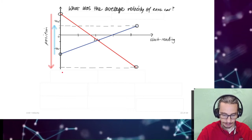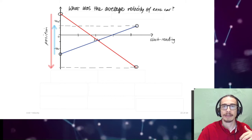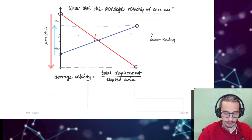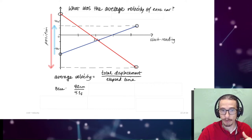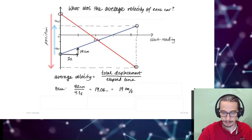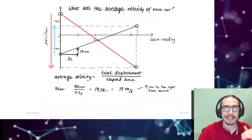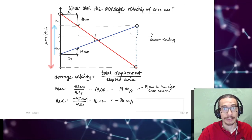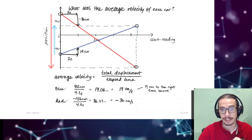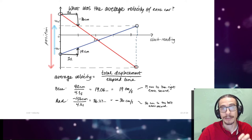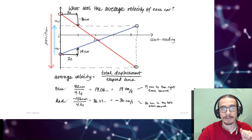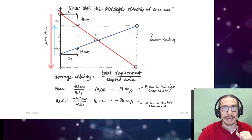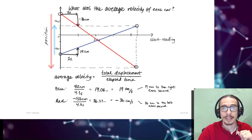Average velocity, like average speed, is total displacement divided by total elapsed time. Blue car: +82 cm ÷ 4.3 s = +19 cm/s, meaning it moved 19 centimeters to the right each second. Red car: −156 cm ÷ 4.3 s = −36 cm/s, meaning it moved 36 centimeters to the left each second. Visualizing over one second: the blue car advances 19 cm to the right while the red car moves 36 cm to the left.